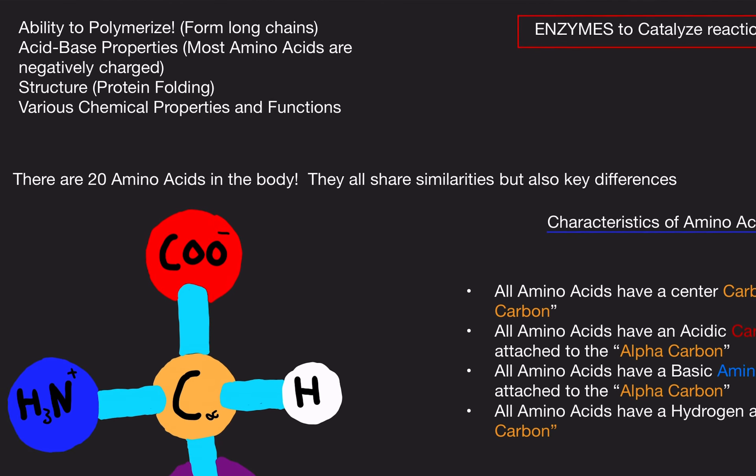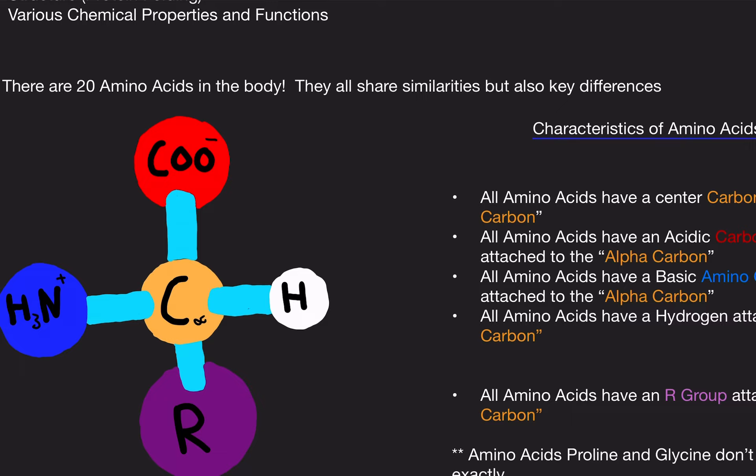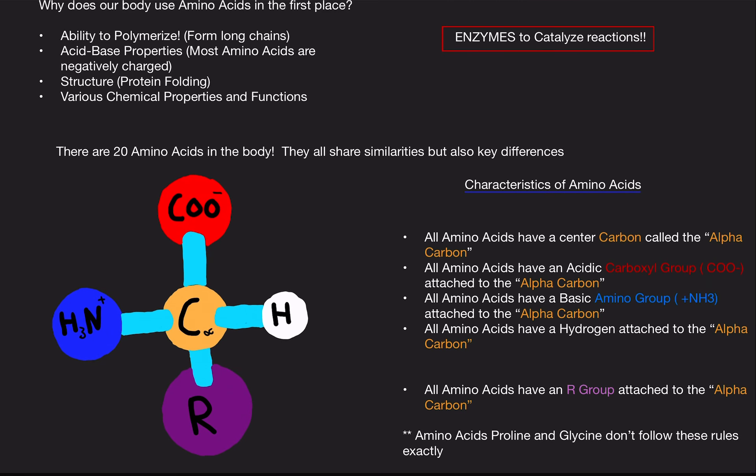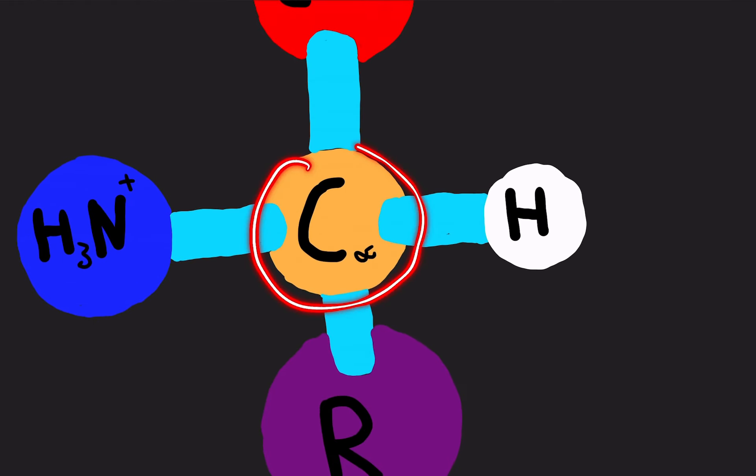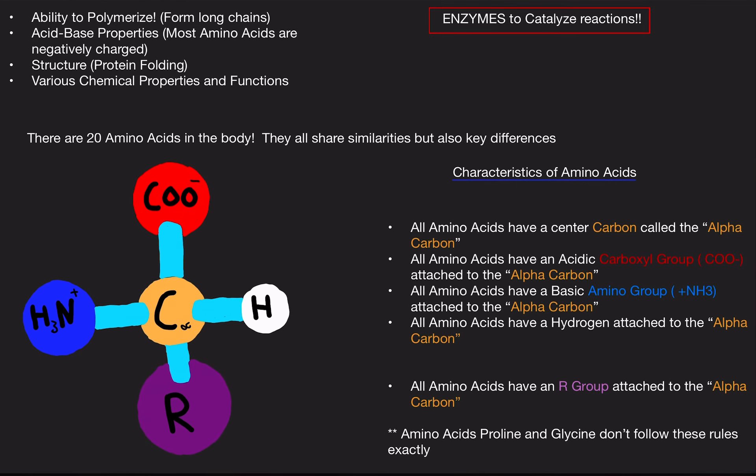So there are 20 amino acids in the body. They all share similarities, but also key differences. Well, let's take a look. So the first thing you're going to notice is the center molecule. All amino acids have a center carbon. This is this carbon right here. This is called the alpha carbon, the center carbon. The center carbon or the alpha carbon is always tetrahedral. There's always four things bound to it.